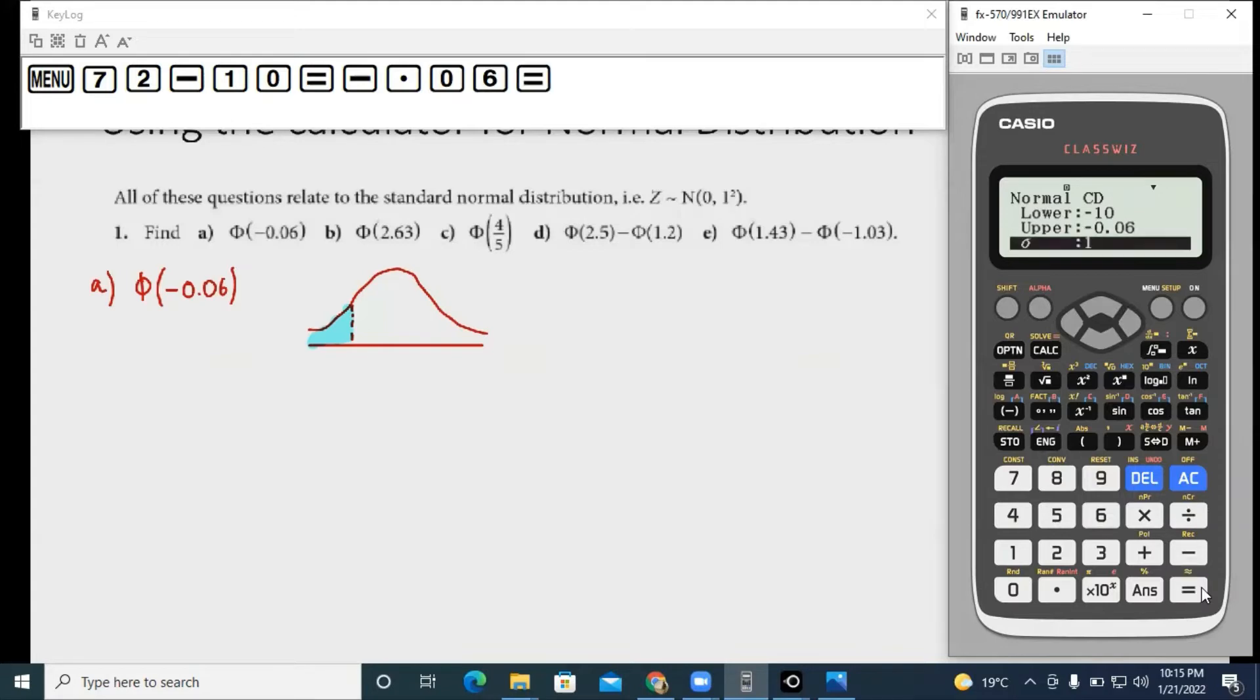Press equals to. Sigma is always 1 for a standardized normal distribution and mu is always 0 for a standardized normal distribution. You press equals to and your calculator can calculate this probability and tell you that p is equals to 0.4761.